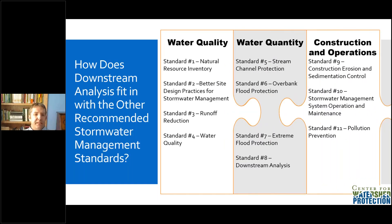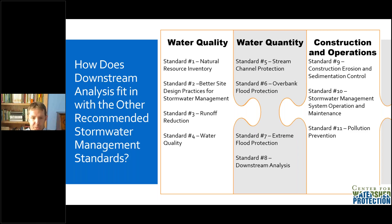So how does downstream analysis fit with the other stormwater management standards? There are 11 stormwater management standards in the Georgia Stormwater Management Manual. The first four involve site design to improve water quality: natural resource inventory, better site design practices, runoff reduction, and water quality. The second group addresses water quantity — that's what we're dealing with today. Standard five looks at stream channel protection, standard six at overbank protection, standard seven at extreme flood protection, with storms getting larger from standard five through seven. And then standard eight is our downstream analysis.